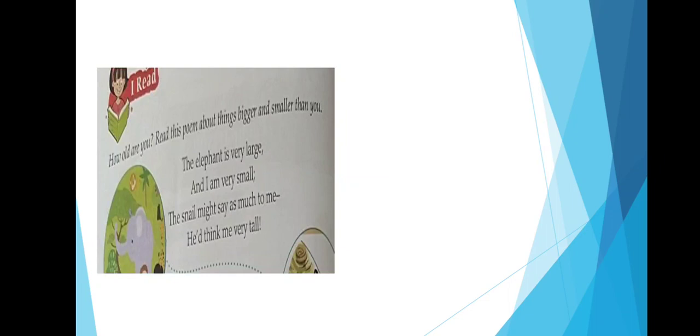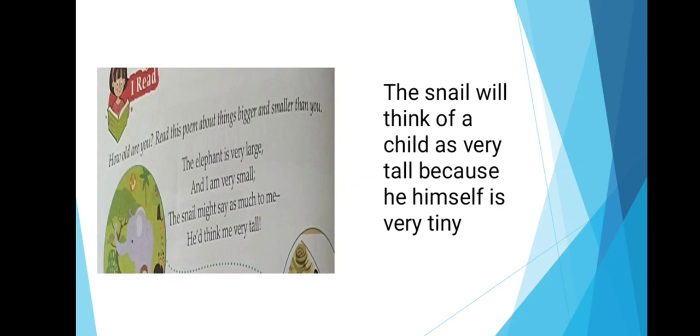The first para, the elephant is very large and I am very small. The snail might say as much to me. You think me very tall. The girl says that the snail must be thinking that I am very tall, because snail himself is tiny, so small. Here, she is comparing bigger and smaller.